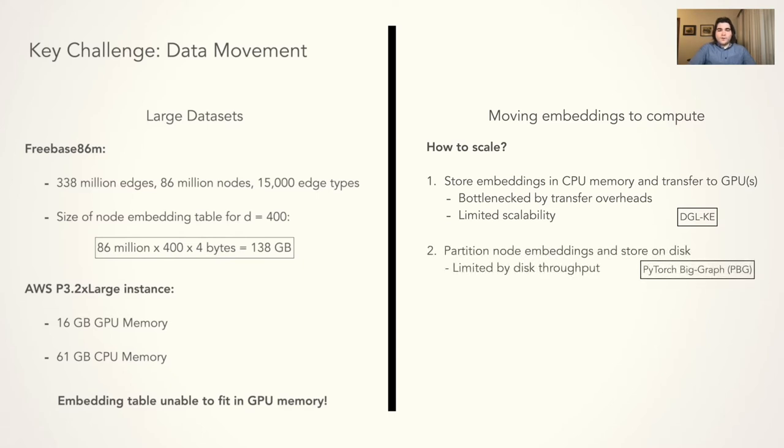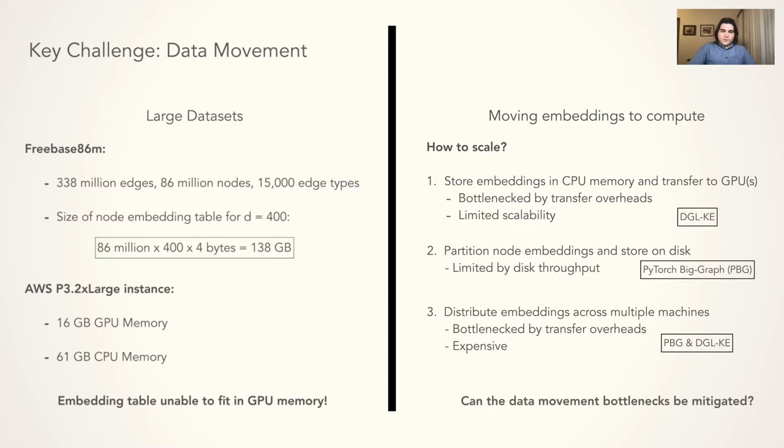Another approach used by Facebook's PyTorch Big Graph is to partition the parameters and store them on disk, swapping partitions into GPU memory as needed. This approach is bottlenecked by swapping of partitions. Both DGLKE and PyTorch Big Graph support a distributed multi-CPU mode, but this is expensive, has a complex deployment, and is still impacted by data transfer overheads. Systems that scale the training of graph embeddings are limited by data movement. Can these limitations be lifted?